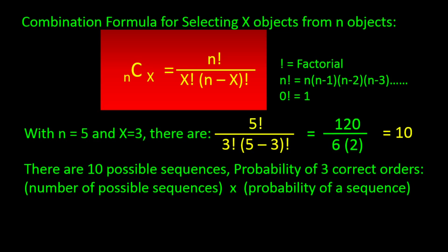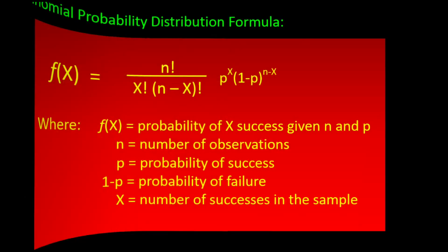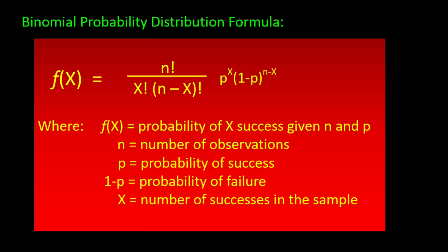To find the probability of 3 correct orders from a total of 5 irrespective of order, we take the number of possible sequences — which we calculated as 10 — times the probability of a particular sequence, which was 0.00729. Multiplying these two gives 0.0729. This is the probability of getting 3 successes out of 5 irrespective of the order. These computations can get tedious when broken down intuitively, so we have a formula for the binomial distribution that makes it simpler — but it's really the same thing.